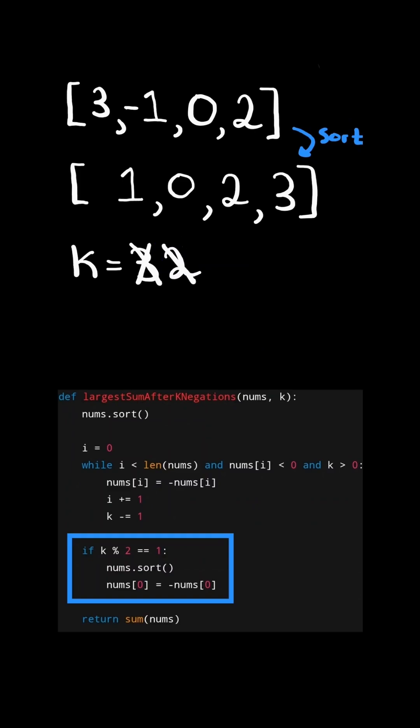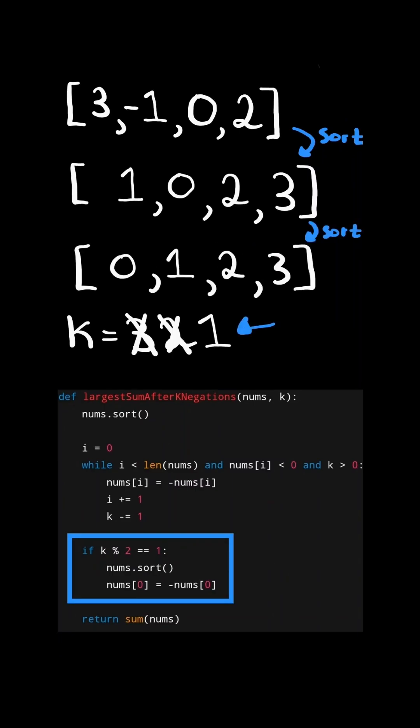Let's assume instead k was equal to 1 at this point. This means we need to flip one more number. So we want to sort the list again to choose the smallest number. And in this case, we flip 0 k times.